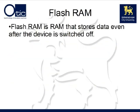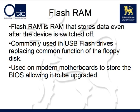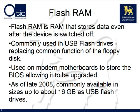Flash RAM is a read-write form of solid state storage that retains data even after the device is switched off. The most common implementation of flash RAM is a USB flash drive, which is replacing the function that used to be filled by the floppy disk drive. You can find flash RAM in many other technologies nowadays — for example, the BIOS on a modern motherboard is stored in flash RAM, allowing it to be upgraded at a later date if required. As of late 2008, you can get flash RAM commonly in sizes up to about 16 gigabytes for a USB flash drive.